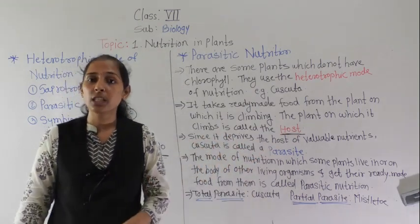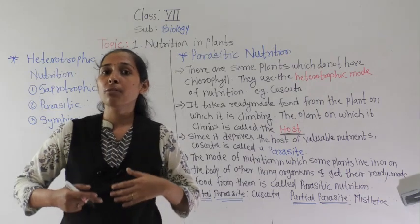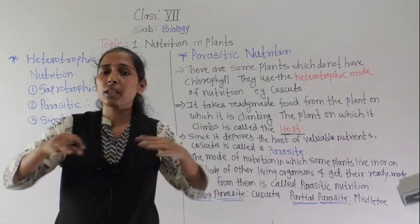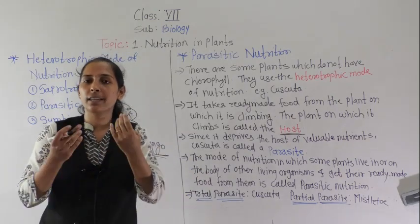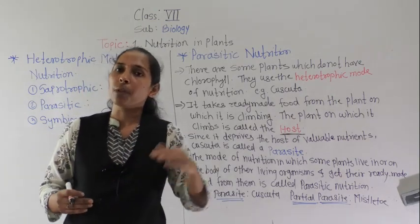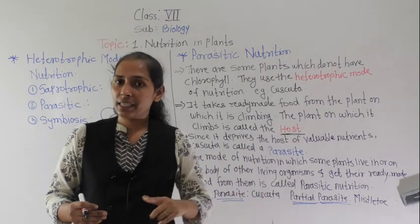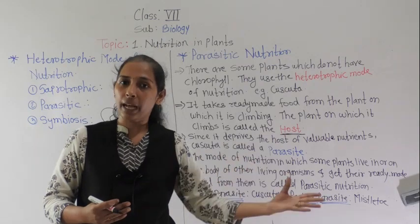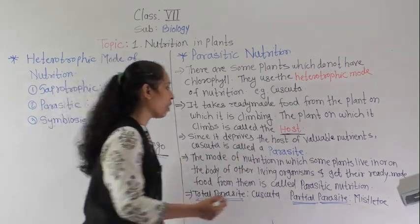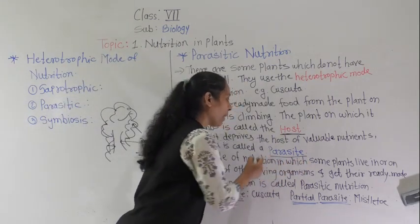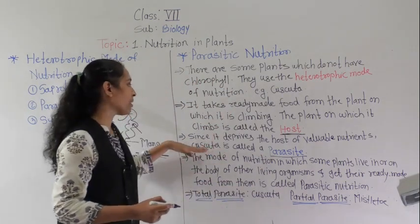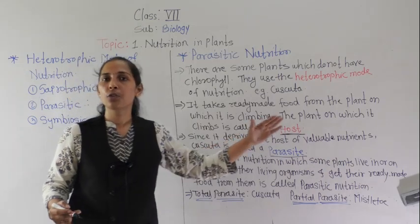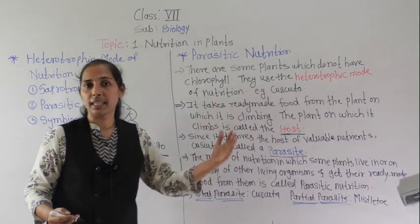For their nutrition, they are getting food from other plants. From the host plants, they are taking ready-made nutrition — only absorbing, only sucking the nutrients from the host plant. Plants that absorb or suck the nutrients from another host plant are called parasitic plants. The cascuta does the same thing, so cascuta is an example of parasitic mode of nutrition — it is a parasite plant.